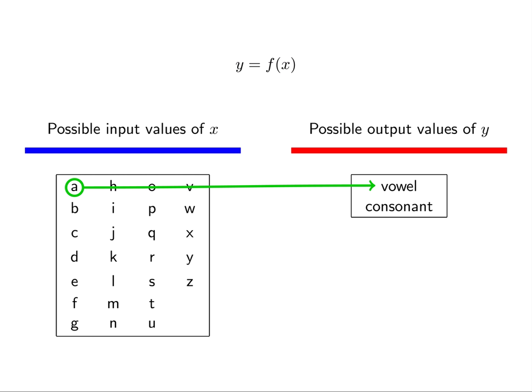Given the English letter A, our function should return the value vowel. Given the English letter B, our function should return the value consonant.